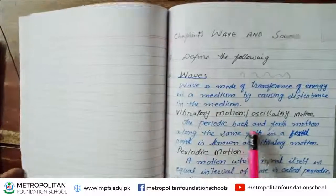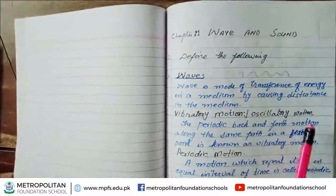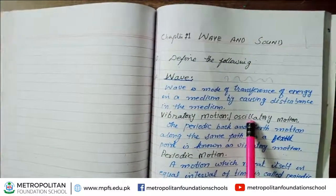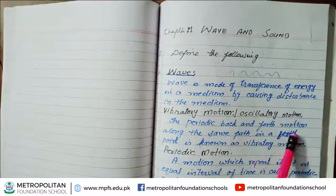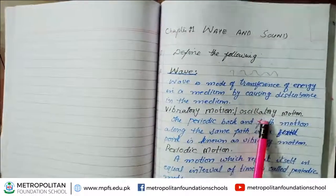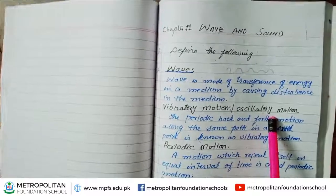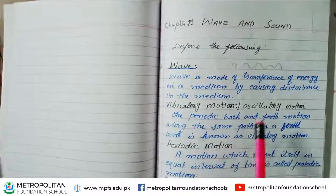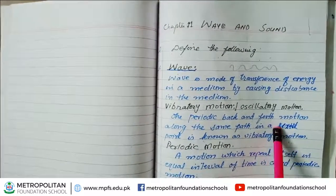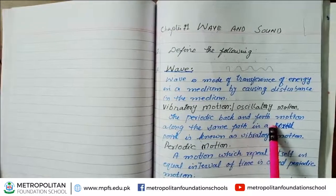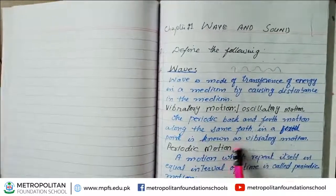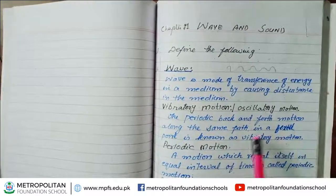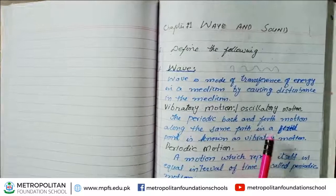For example, vibratory motion and oscillatory motion — we go to the extreme and then we go back to the other side. For example, I have shown you a swing. In the middle of the way, we go to one side and then back to the other side.